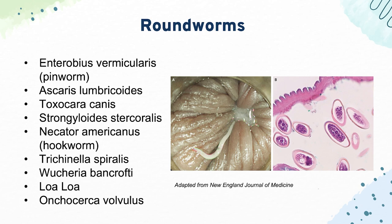Then we have Trichinella spiralis, which comes from undercooked pork and causes myositis and periorbital edema — sometimes from eating bear meat. Wuchereria bancrofti causes lymphatic filariasis and lymphedema. With Loa loa, you can see a worm in the conjunctiva. And for Onchocerca volvulus, you'll see black skin nodules and blindness — it comes from the black fly, so everything about it is black.